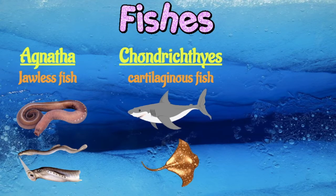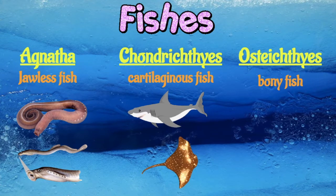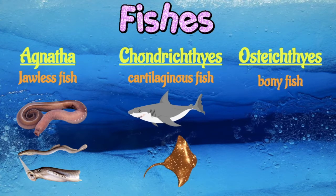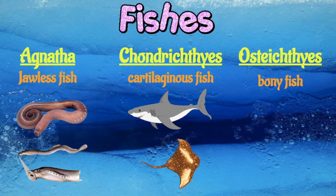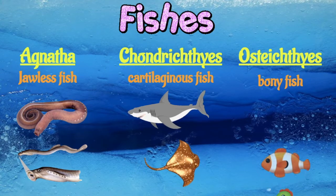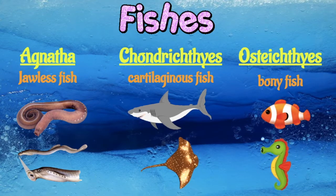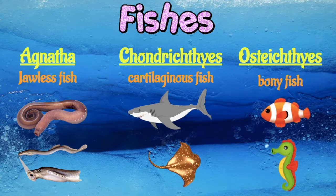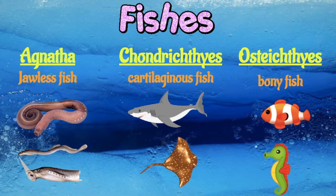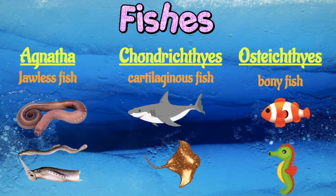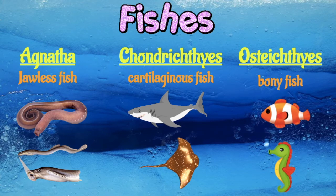And lastly, the Osteichthyes, or the bony fishes. They are the fishes which have skeletons primarily composed of bone tissues. Examples of these are clownfish, seahorses, eels, trouts, and many more.